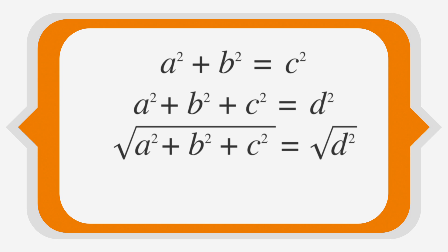Now take the square root of both sides. And last, substitute the length, width, and height in for a, b, and c. The square root of length squared plus width squared plus height squared equals the long diagonal, or d.